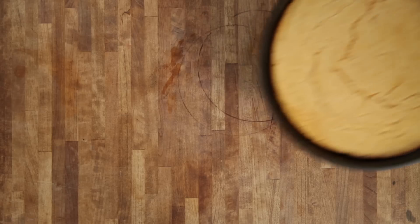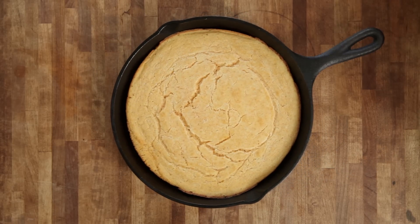Cast-iron is a great heat conductor, which means it gets really hot and stays hot. It's perfect for cooking anything from cornbread to scallops. Some new pans are already seasoned, but if you need to season, re-season, or revive yours